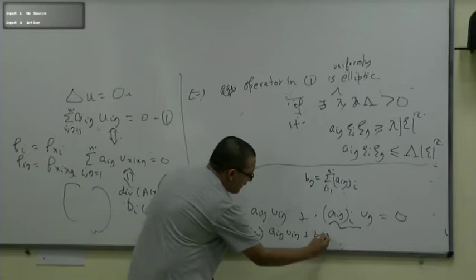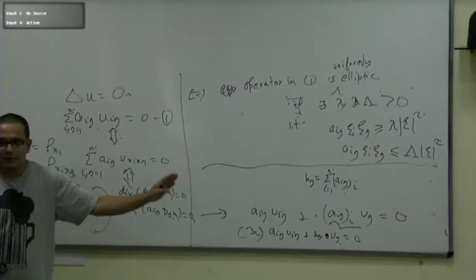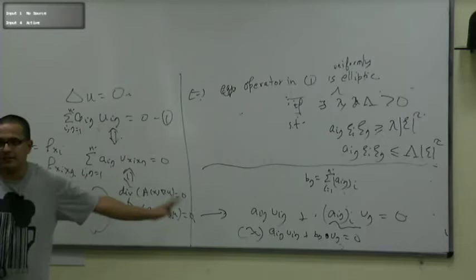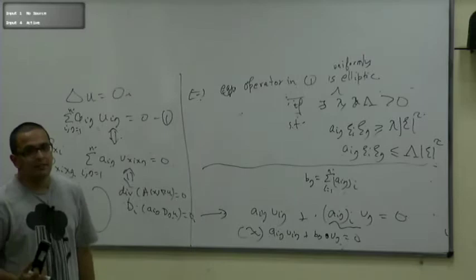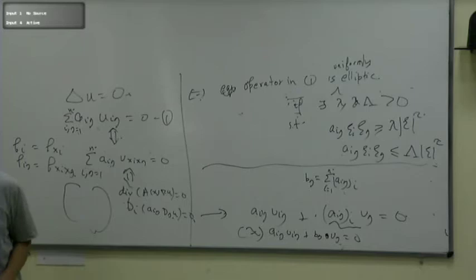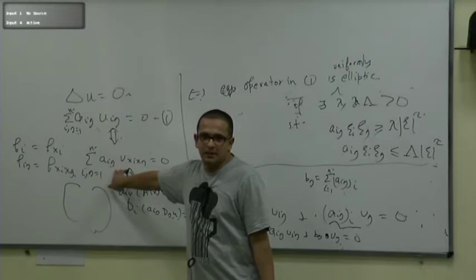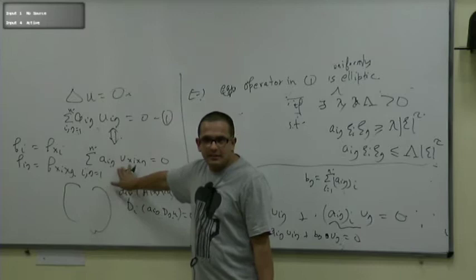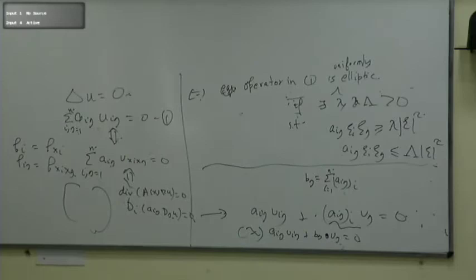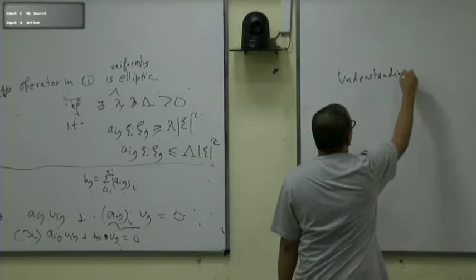You can switch from one form to the other, but you need enough regularity of the coefficients. For now, assume everything is smooth. For the first segment of the lecture I will only focus on the pointwise information, which is provided by the non-divergence equation a_{ij}u_{ij} = 0. Let us try to understand what this equation means.